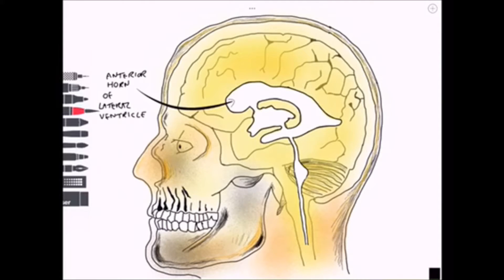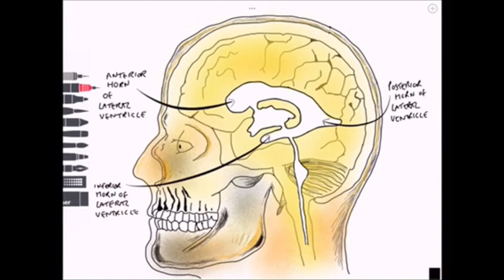Inferiorly, projecting into the temporal lobe, we have another extension known as the inferior horn of the lateral ventricle and this connection forms a C-shape. Posteriorly we have an extension into the occipital lobe, the posterior horn of the lateral ventricle.